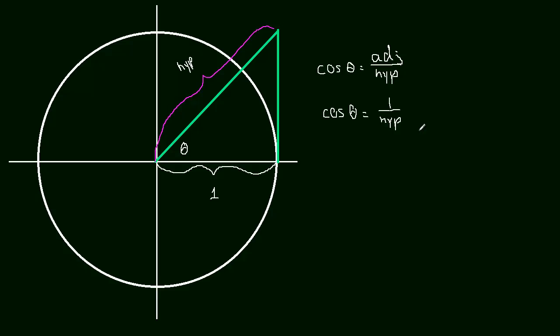And now we can figure out what the hypotenuse is by multiplying by the hypotenuse and dividing by cosine. So essentially, these two are going to flip. Flip positions. So what we're going to end up with is the hypotenuse is equal to 1 over cosine of theta.